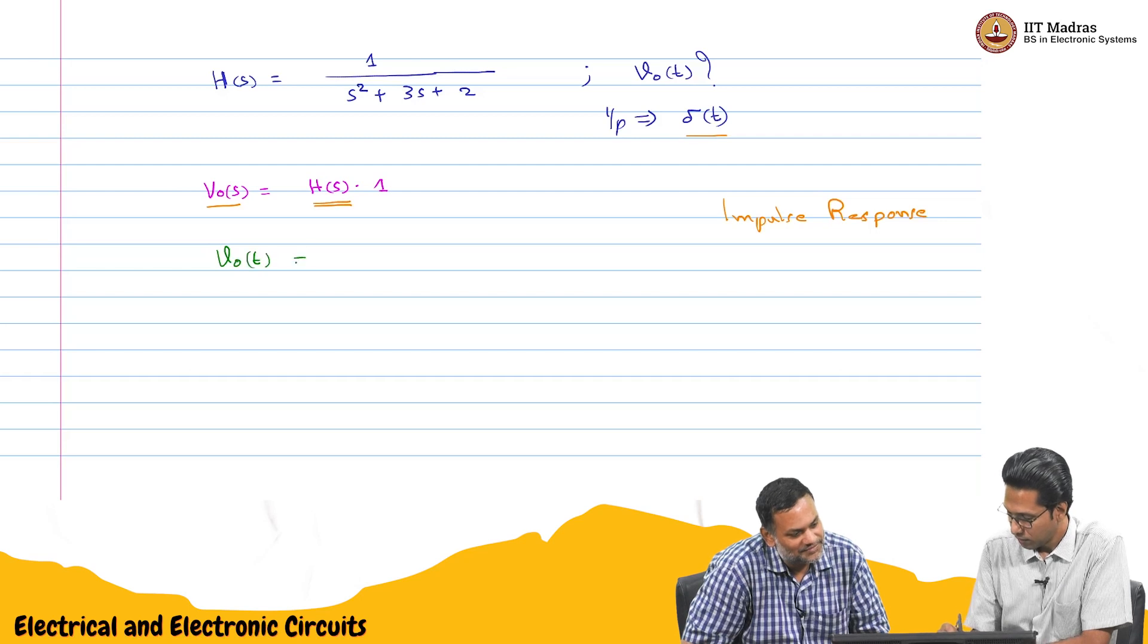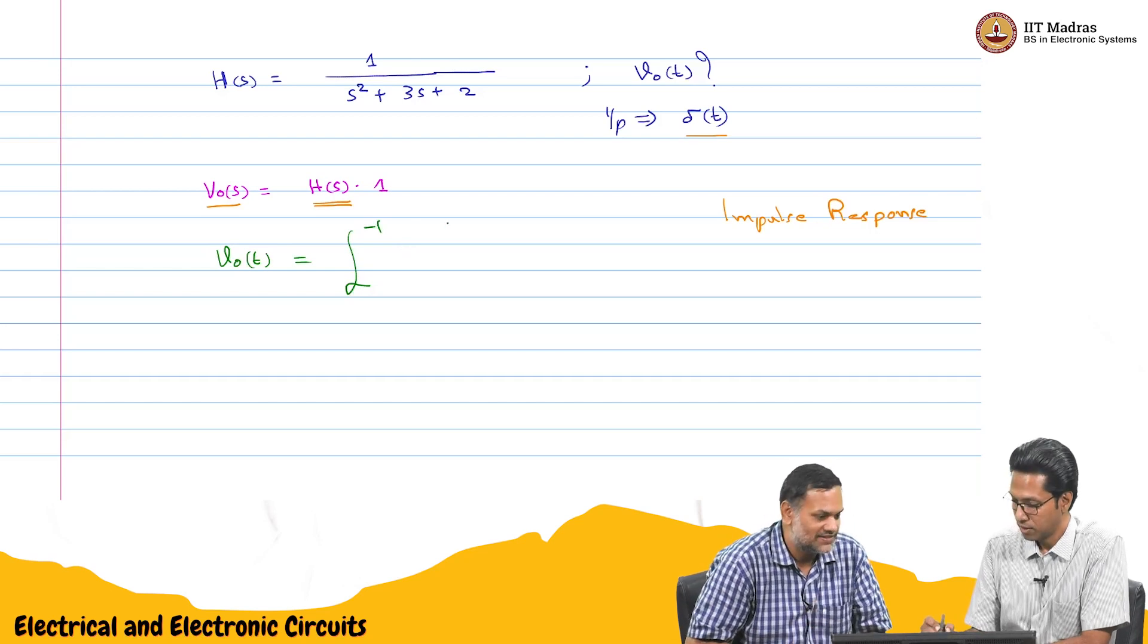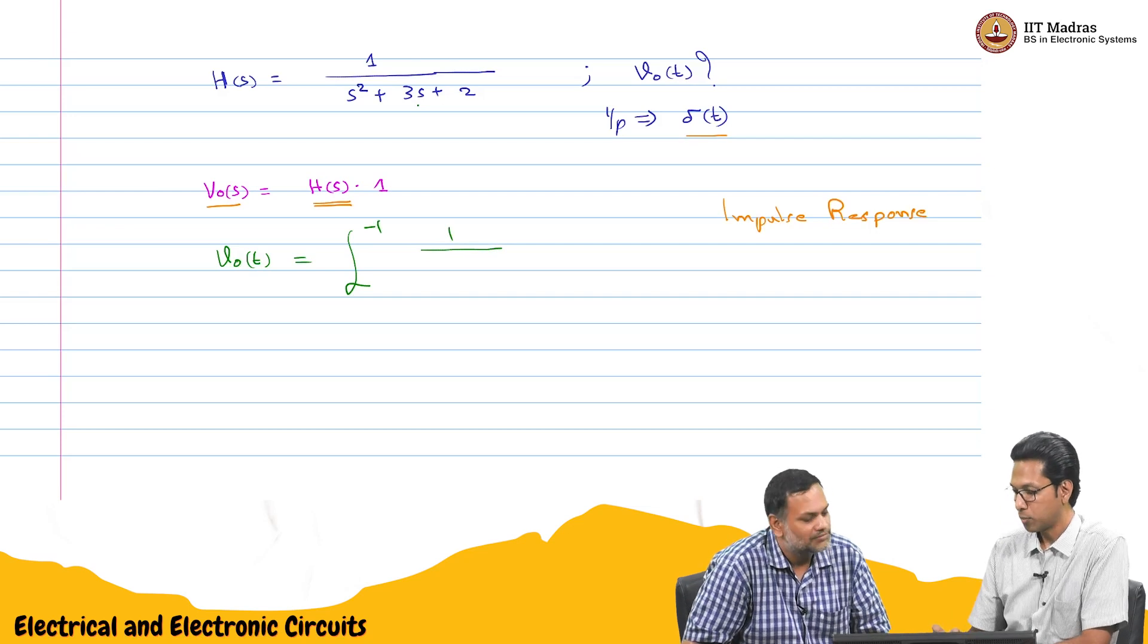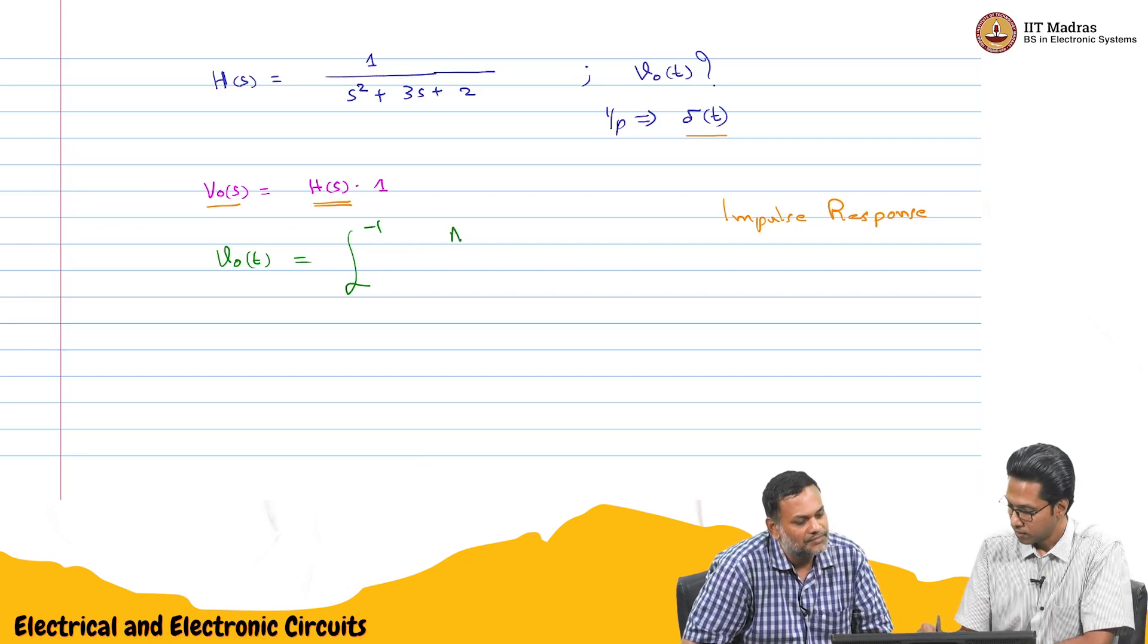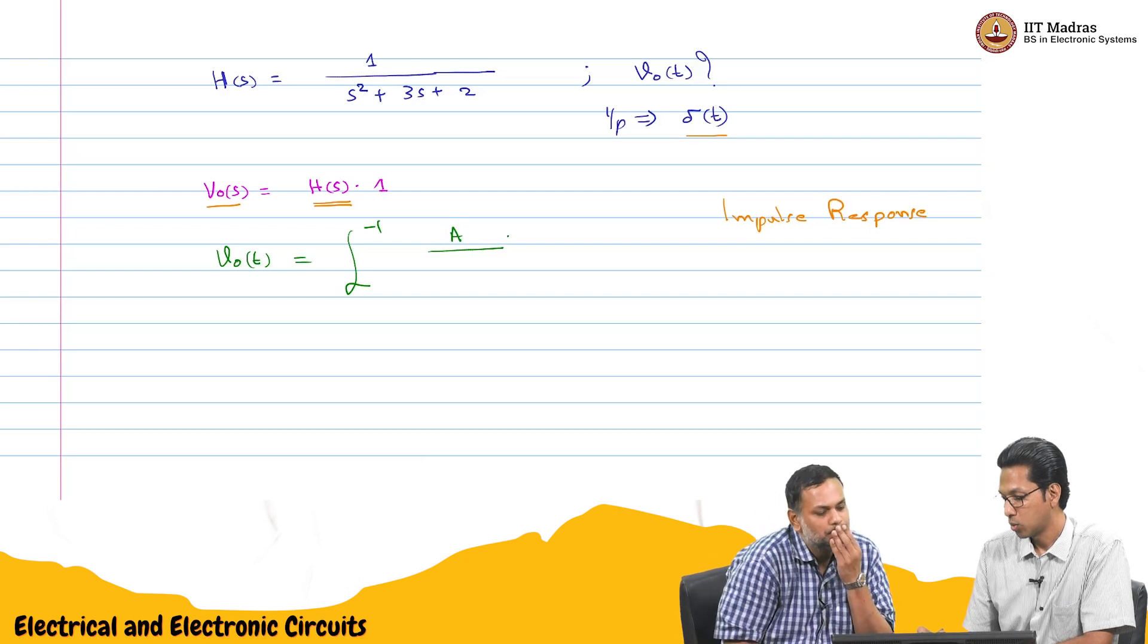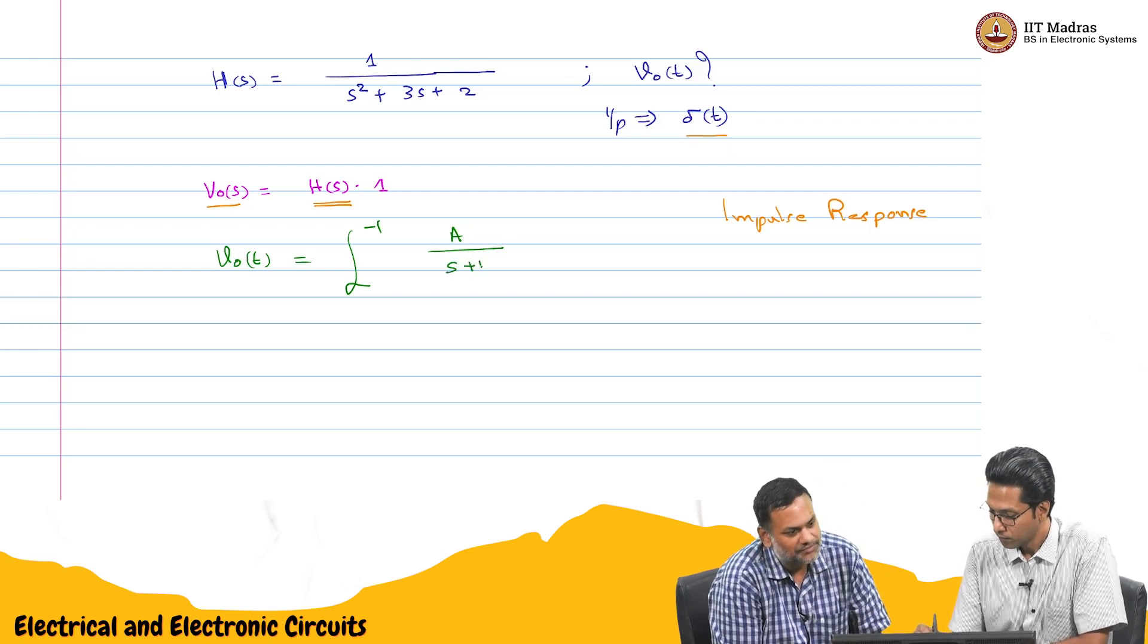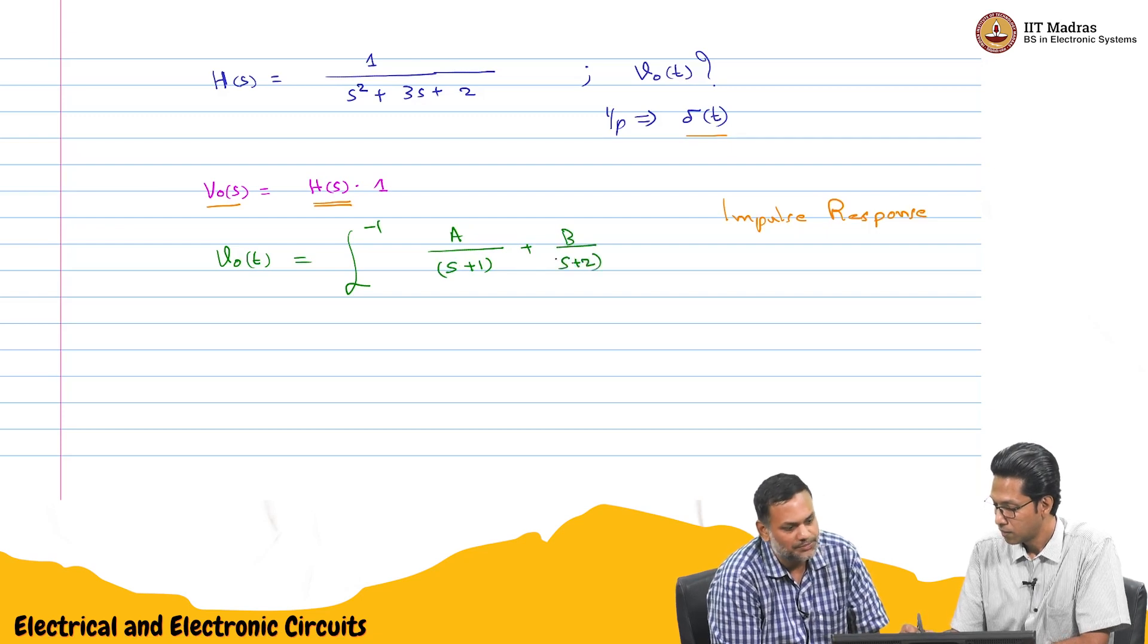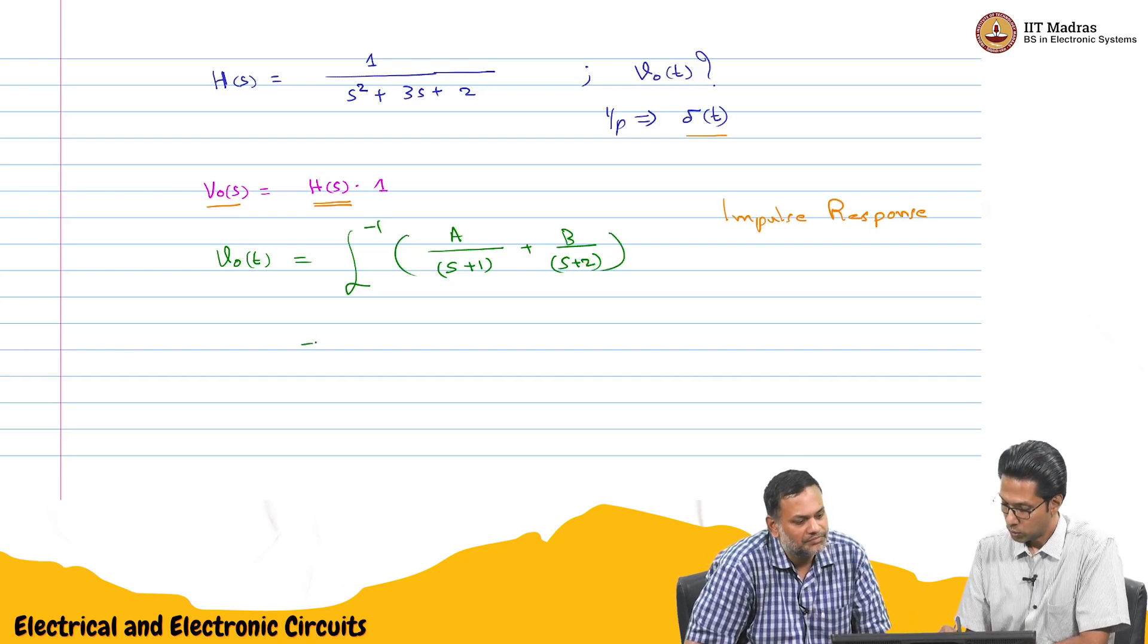V naught of t is just the Laplace inverse of H of s, which is 1 by s square plus 3s plus 2. Which we can represent as A by s plus 1 plus B by s plus 2.